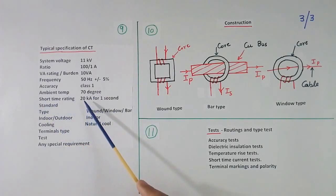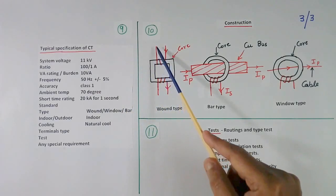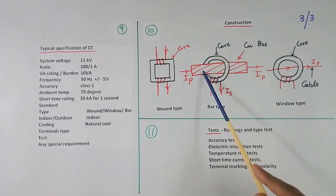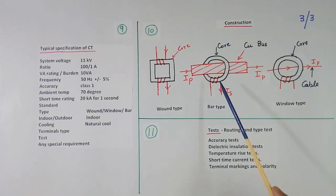Then short time rating, 20 kA per 1 second. What happens, if there is some short circuit or fault in the system, then heavy current flows. That heavy current will flow in this winding, primary winding. Our CT should not fail. So that CT should be able to take short time rating current. I have written 20 kA. However it may be something else also. Then standard. There are various standards available, Indian standard, international standard. We have to tell which standard will be followed.